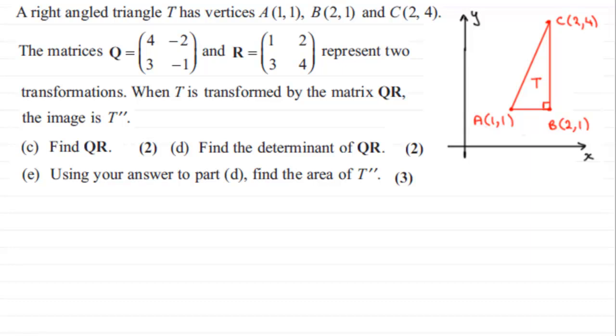Okay, welcome back. First of all, in part C, we've got to work out what Q times R is. So let's start off with Q times R. You've got to do it in this order. Matrix multiplication isn't necessarily commutative. That is, you're going to get a different answer if you do it the other way around, so you must do it in this order.